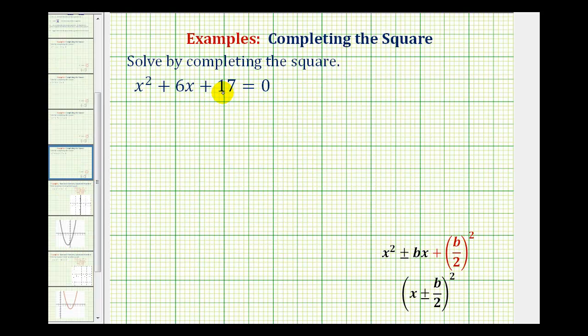The first step here is to move the constant term to the right side of the equation. So I'll have to subtract 17 on both sides of the equation.